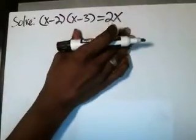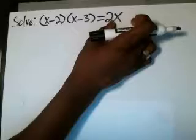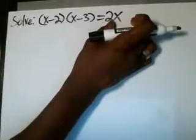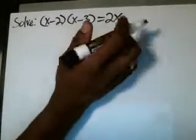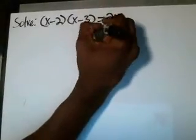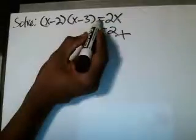Alright, to make this equal to 0, what do you do? You want to remove the negative 2x because 2x minus 2x gives you a 0, makes this whole thing equal to 0. So you do minus 2x here.